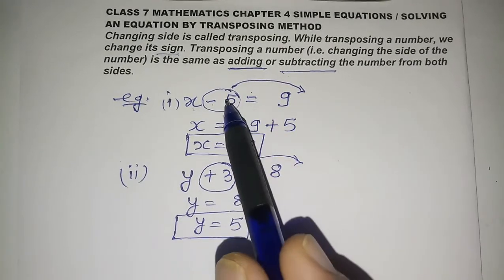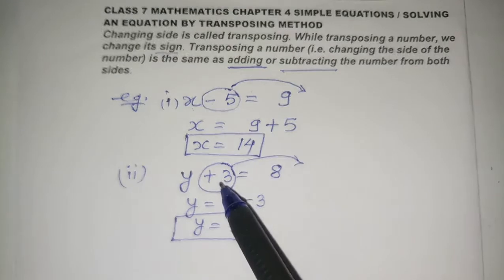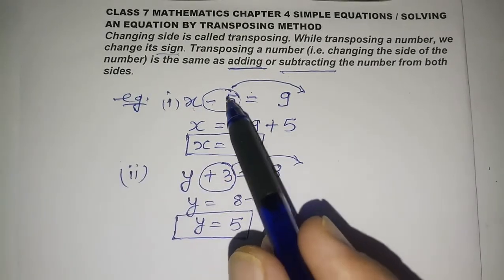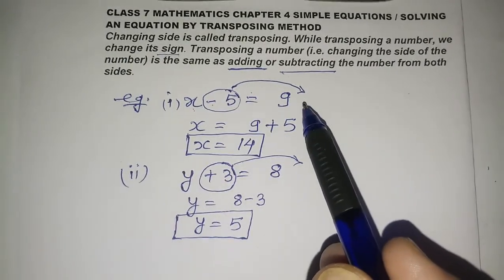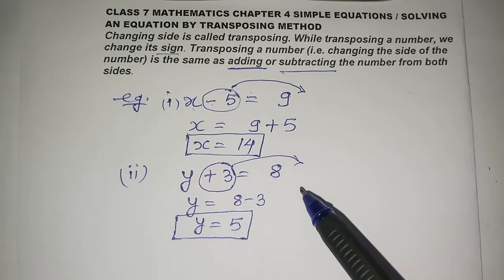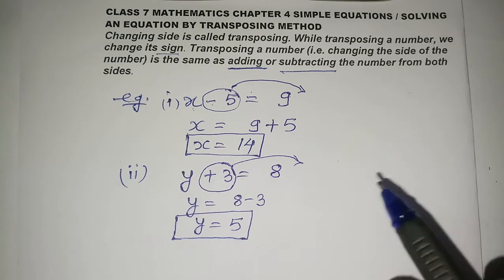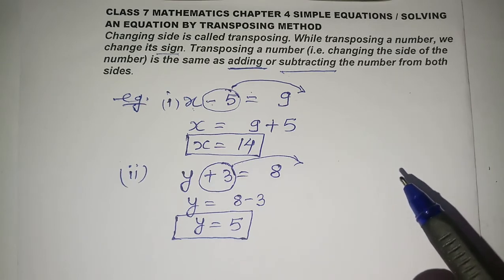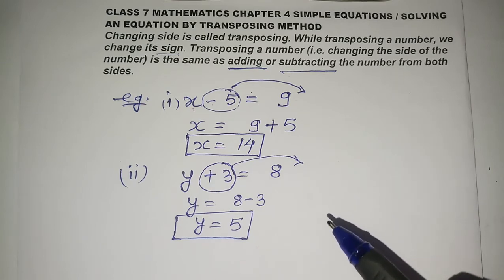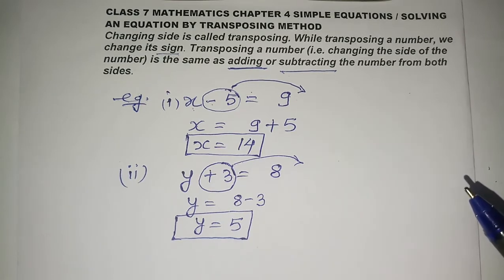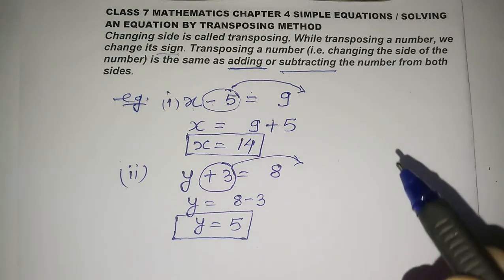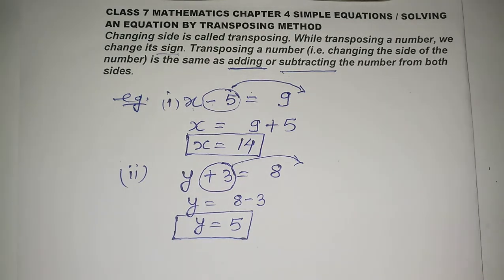This transposing works only for plus and minus. If you have minus, it becomes plus; if you have plus, it becomes minus. For multiplication and division, the rule is: multiplication goes to division, and division goes to multiplication.